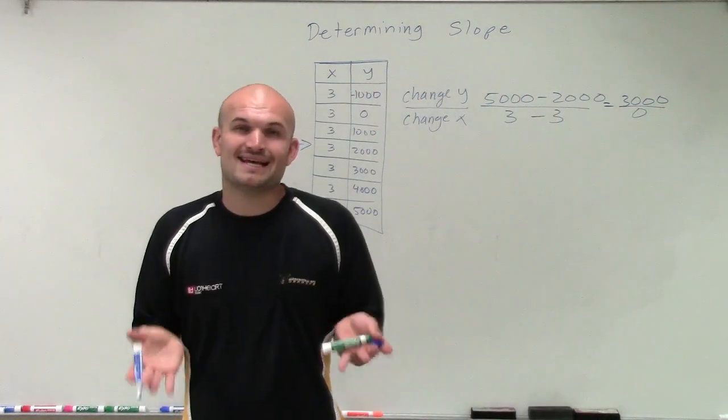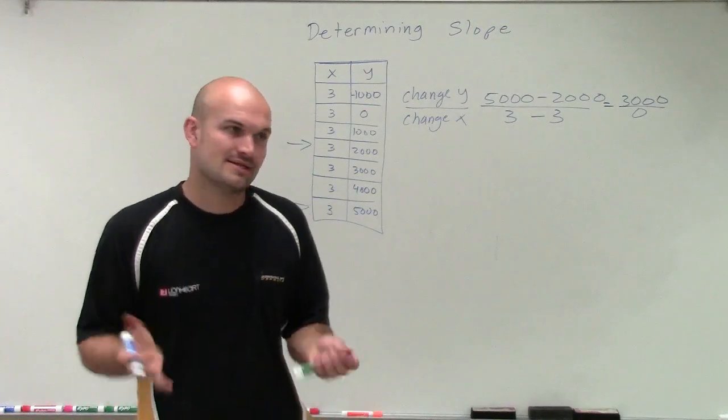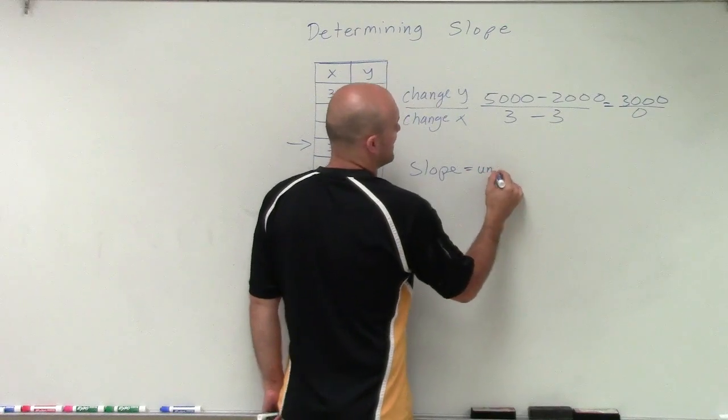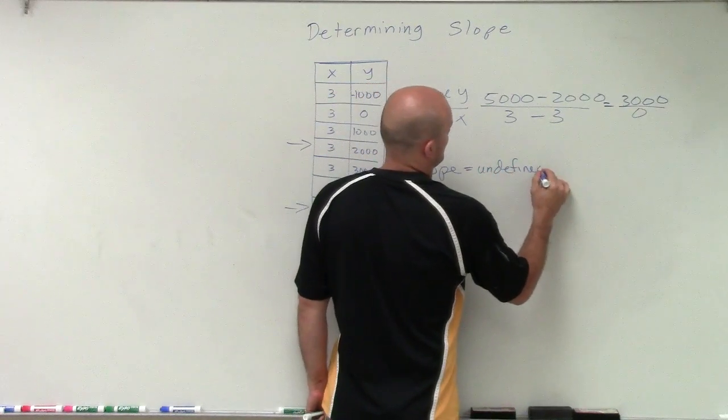Now, we cannot take a number and divide 0 into it. So therefore, in this case, our slope is undefined, all right?